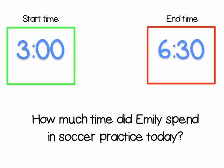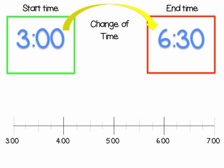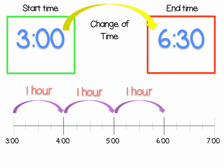We need to find the change of time between 3 o'clock and 6:30 to know how much time Emily spent in soccer practice. We can do this by using a number line. If we place one-hour intervals on the number line, we can start at 3 o'clock, jump to 4 o'clock, jump to 5 o'clock, and to 6 o'clock, then we only need to jump a half an hour to get to 6:30.